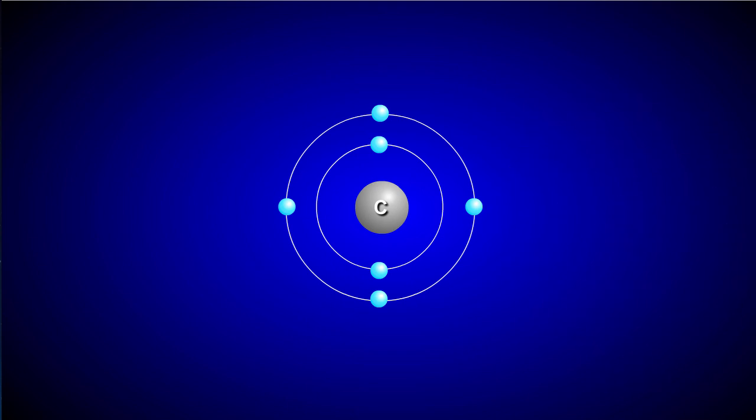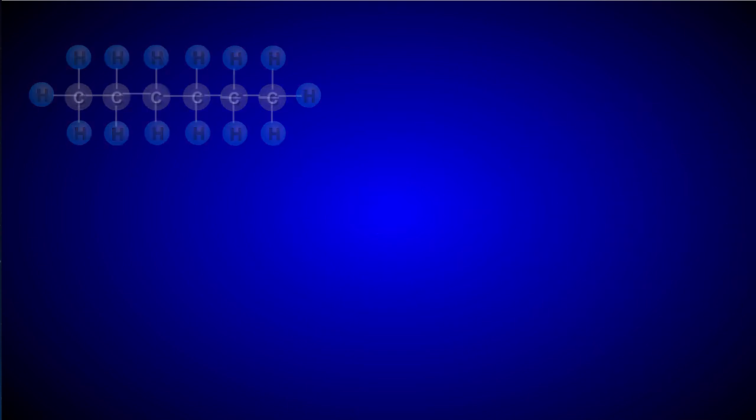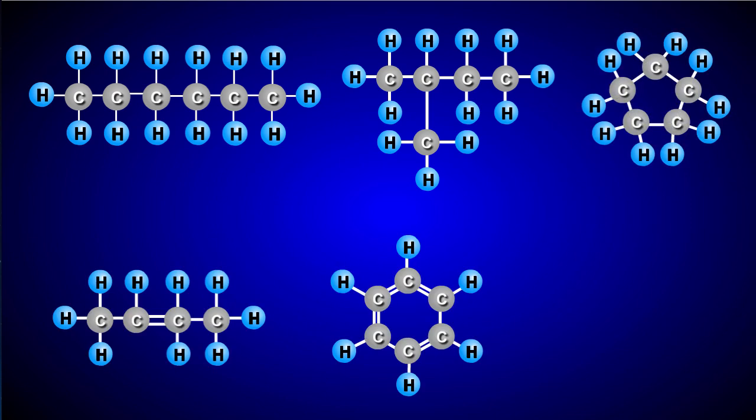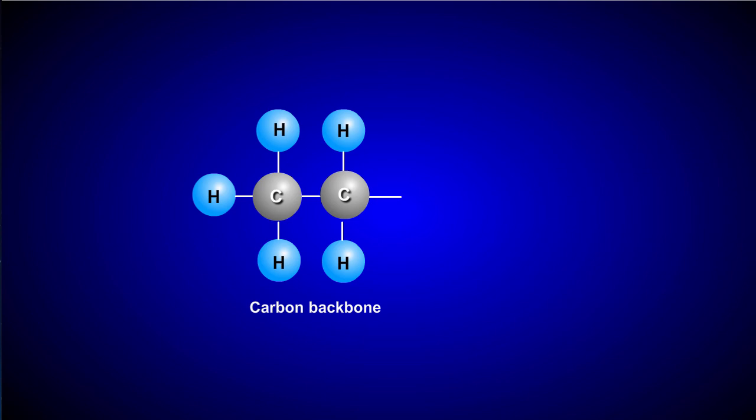Carbon can also bond to itself, forming chains, branch chains, and ring structures. It is also possible for carbon to form double bonds with itself or bond to other elements, such as the oxygen shown here.